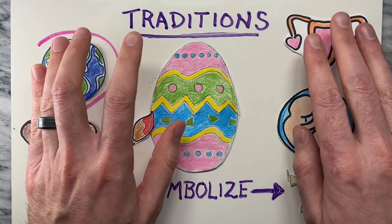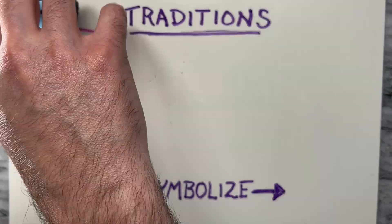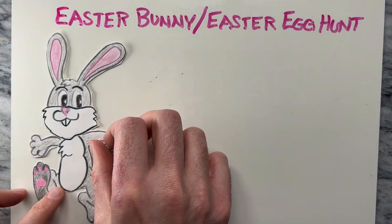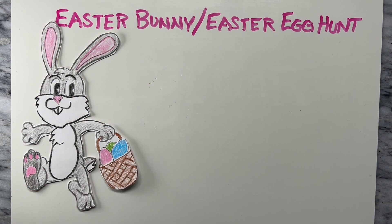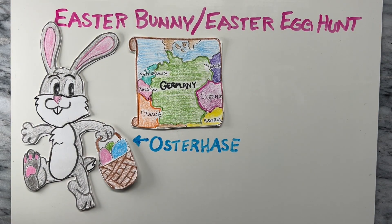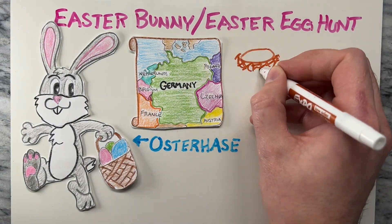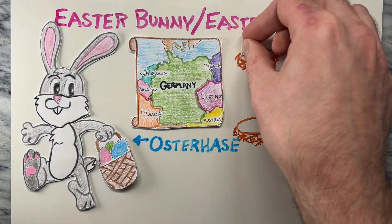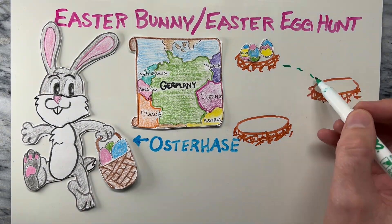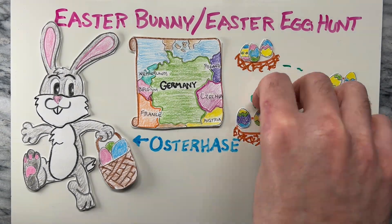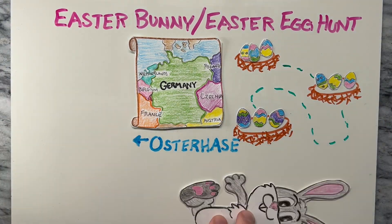Another popular Easter symbol is the Easter bunny. The Easter bunny is believed to have originated in Germany, where it was known as the Osterhase. According to German folklore, the Easter bunny would lay brightly colored eggs in nests made by children, thus leading to the tradition of Easter egg hunts. This tradition has since spread to many other parts of the world.